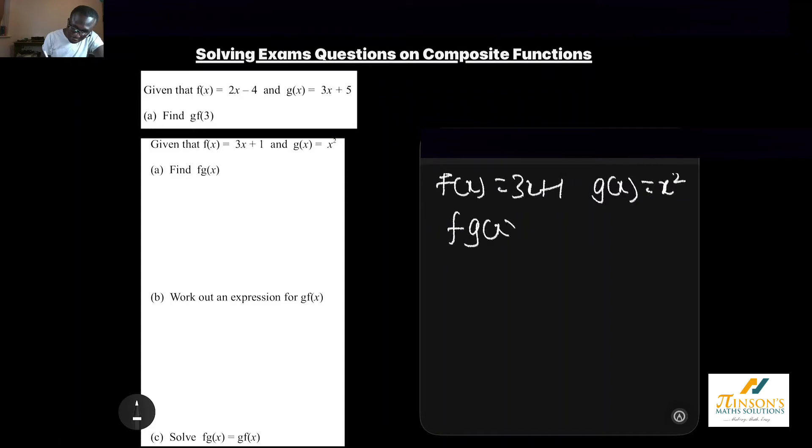To write out f of g of x simply means we start with our g. Our g is x squared. Now this x squared is in bracket in front of f. So wherever we see x, we replace it with x squared. What happened to this x was it was being multiplied by 3 then add 1. So we multiply x squared by 3 then add 1. That gives me 3x squared add 1.